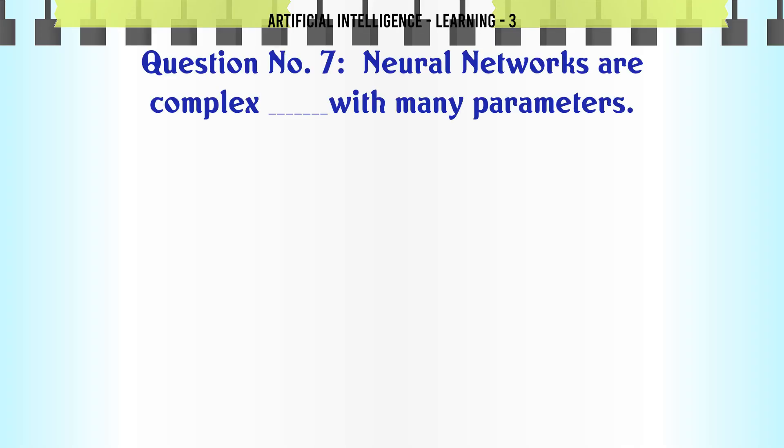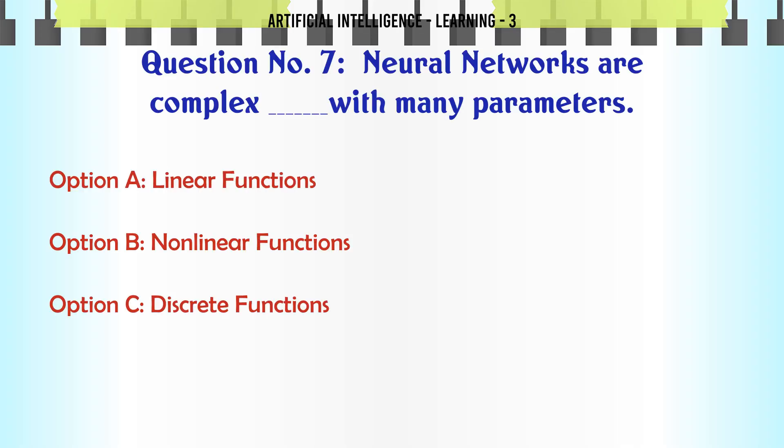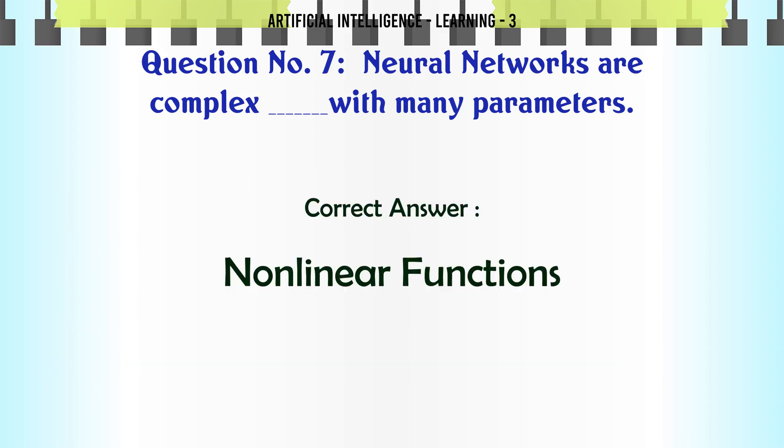Neural networks are complex with many parameters. Option A: Linear functions. Option B: Nonlinear functions. Option C: Discrete functions. Option D: Exponential functions. The correct answer is Nonlinear functions.